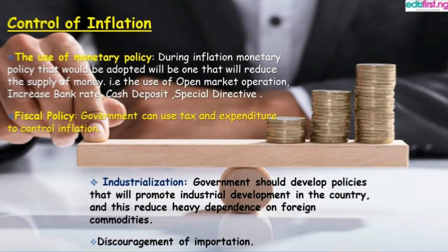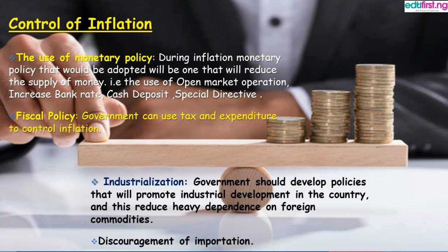How can inflation be controlled? The government can control inflation through the use of monetary policy. The monetary policy suitable for inflation will be one that reduces the supply of money in circulation — for instance, open market operations. The government can also cause an increase in bank rates, cash deposits, special directives, etc.